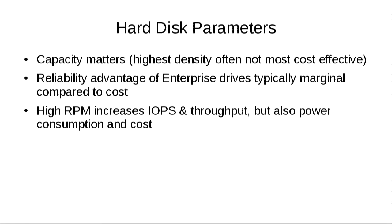Hard disk parameters: capacity matters. The highest density is not necessarily the most cost-effective choice. The reliability advantage of enterprise drives is typically marginal compared to their cost because Ceph is replicating all your data anyway, so who cares if they break? You might like high RPM drives for increased IOPS and throughput, but then you've got more power consumption and cost — so another tradeoff.